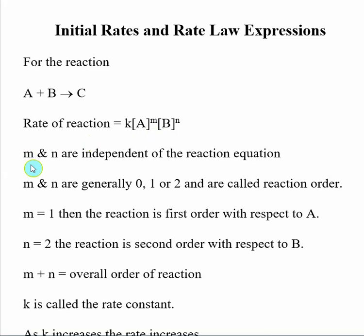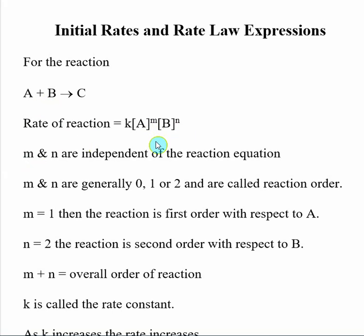One of the most important things to point out when we talk about rate law expressions is that these two exponents, M and N, we cannot get those by looking at a reaction equation. So it's not related to the stoichiometry or anything like that. We have to directly find these exponents M and N from doing an actual experiment. I cannot find them from the reaction equation.